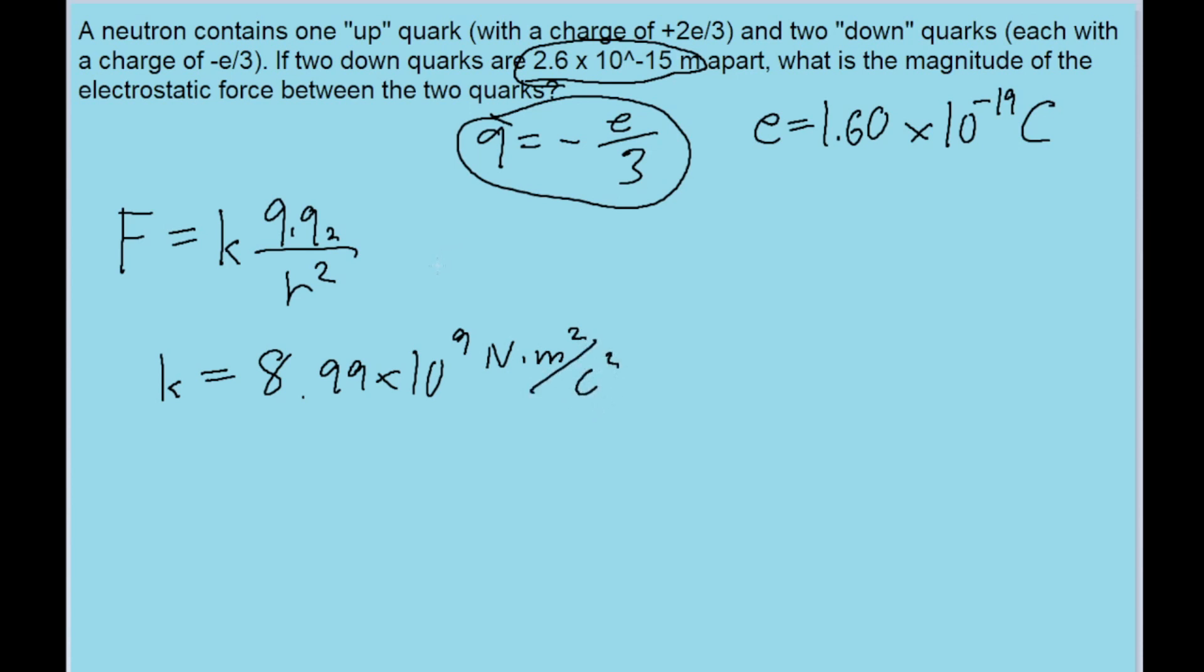That's all you need to know to solve this problem. Just plug those values in, and for both q's use negative e over 3. Though technically you don't have to use the negative sign, since we're only looking for a magnitude here, and the negative signs would cancel out anyway, so we're just going to get a positive answer anyway.